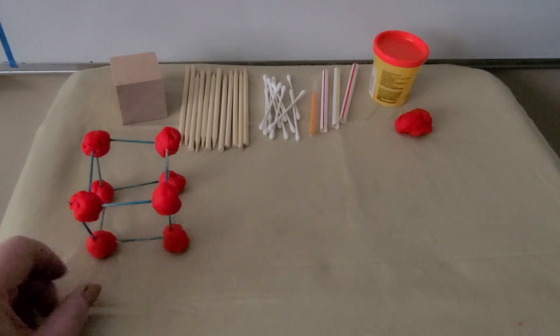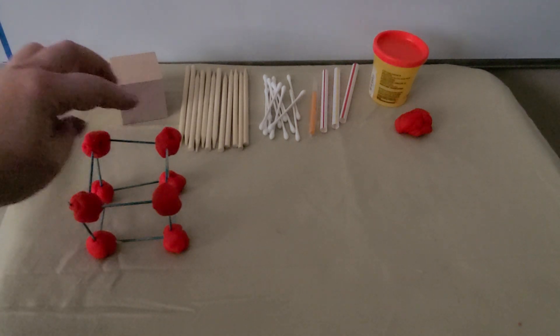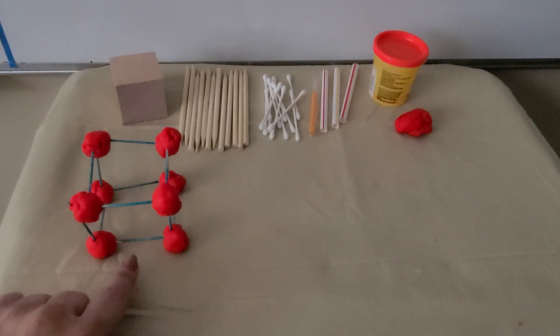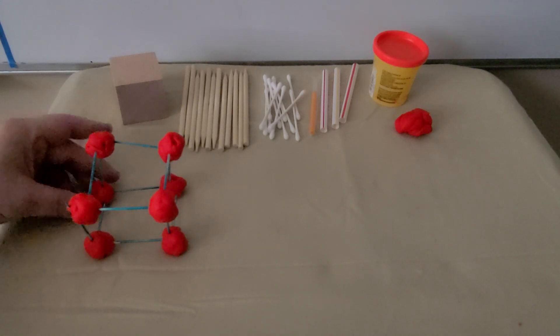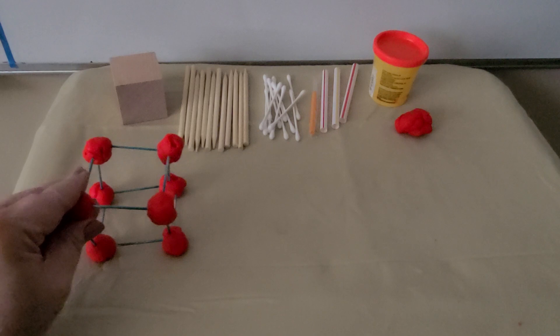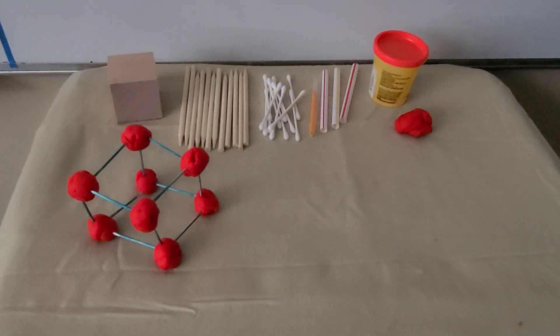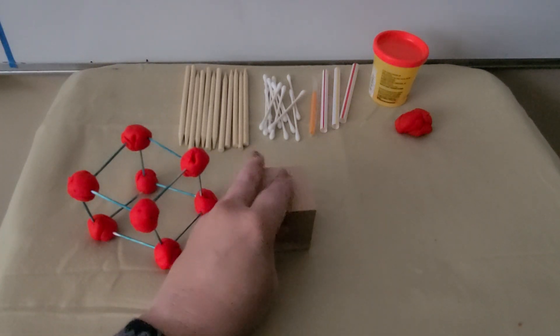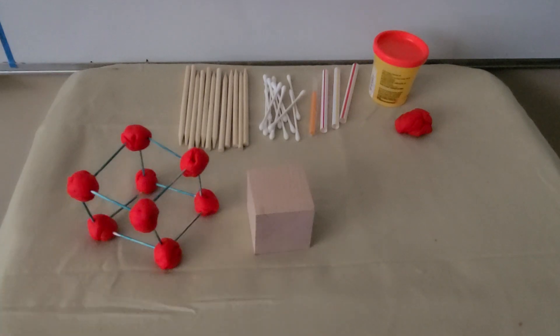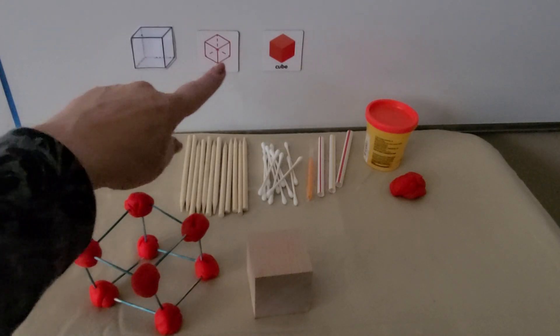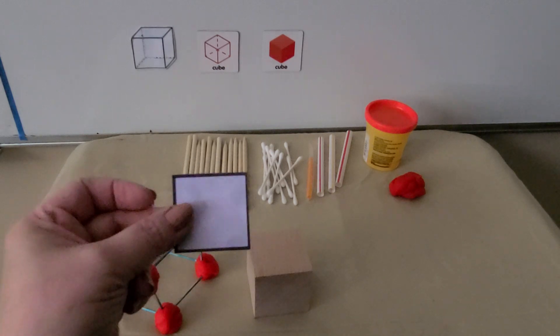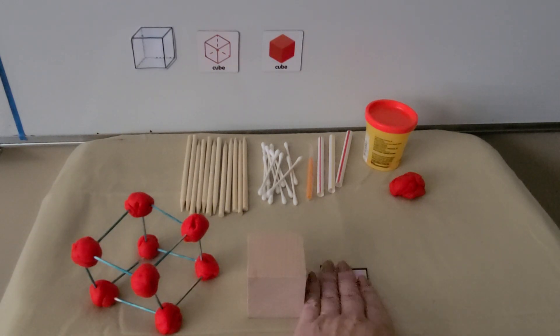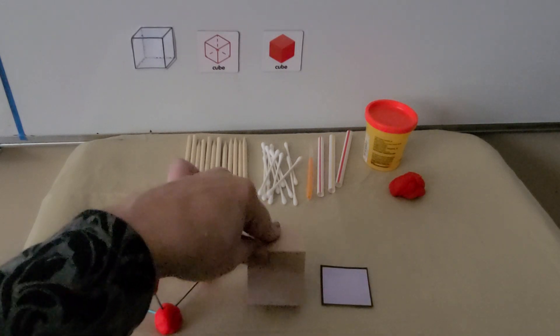We've made a cube and we used eight spheres. Four on the top and four on the bottom for the eight corners. And we used 12 toothpicks. Each toothpick is an edge of our cube. And you can do this too. We've actually made a skeleton of a cube. We can see all of its sides. A square is a flat two-dimensional shape. A cube is a three-dimensional shape that takes up space.